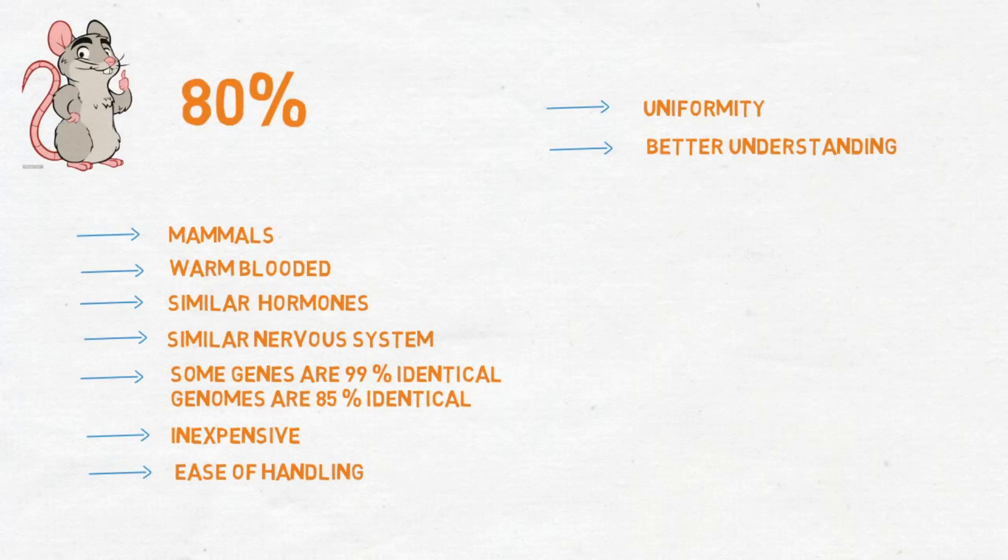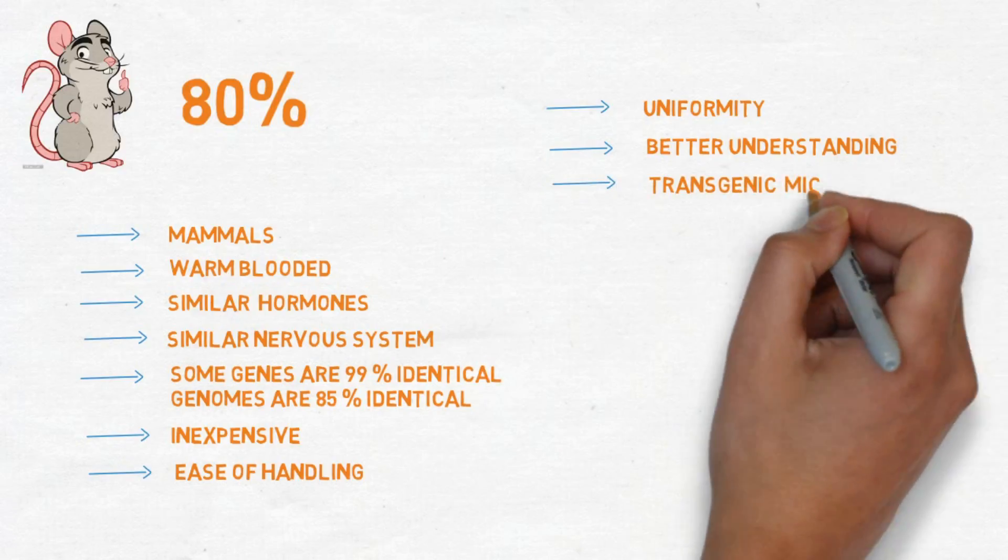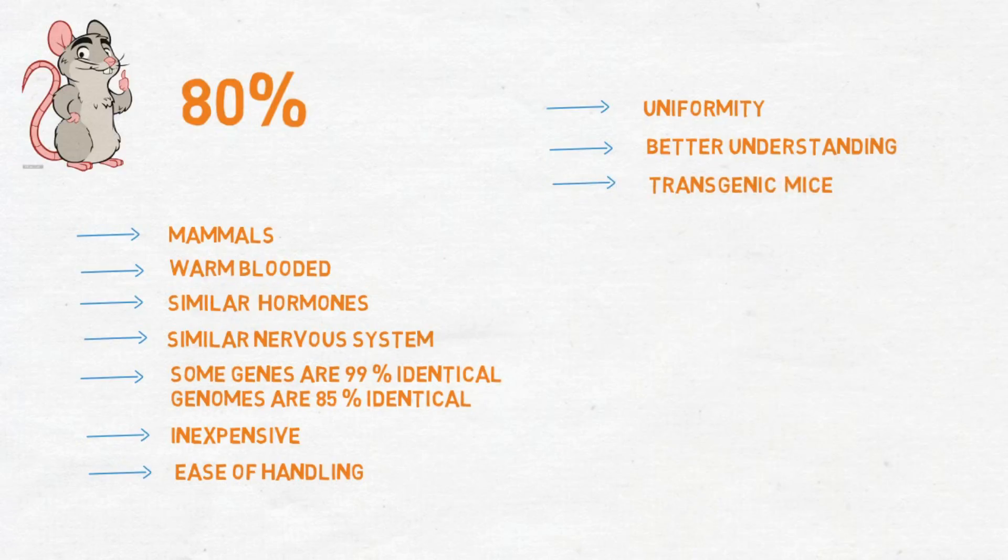Scientists can now breed genetically altered mice called transgenic mice that carry genes that are similar to those that cause human diseases.